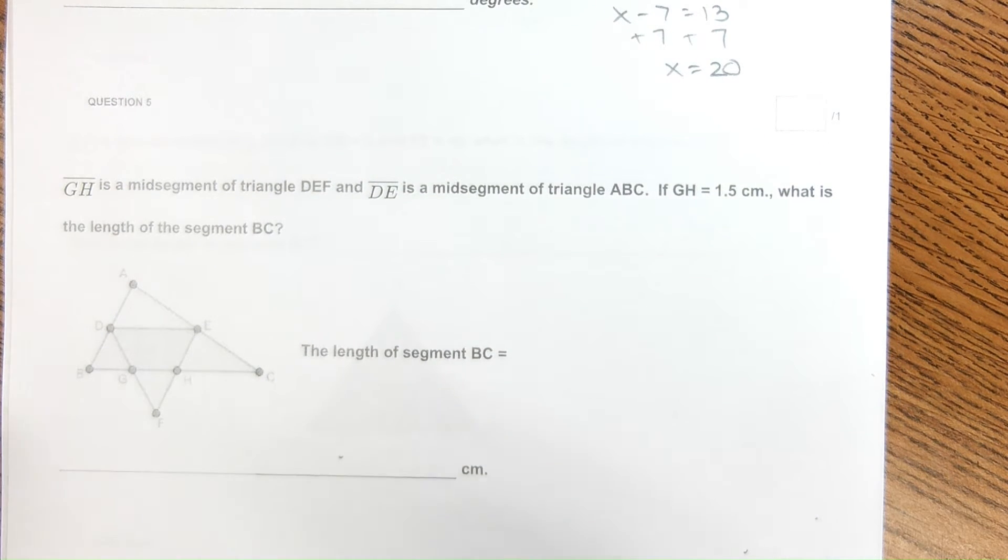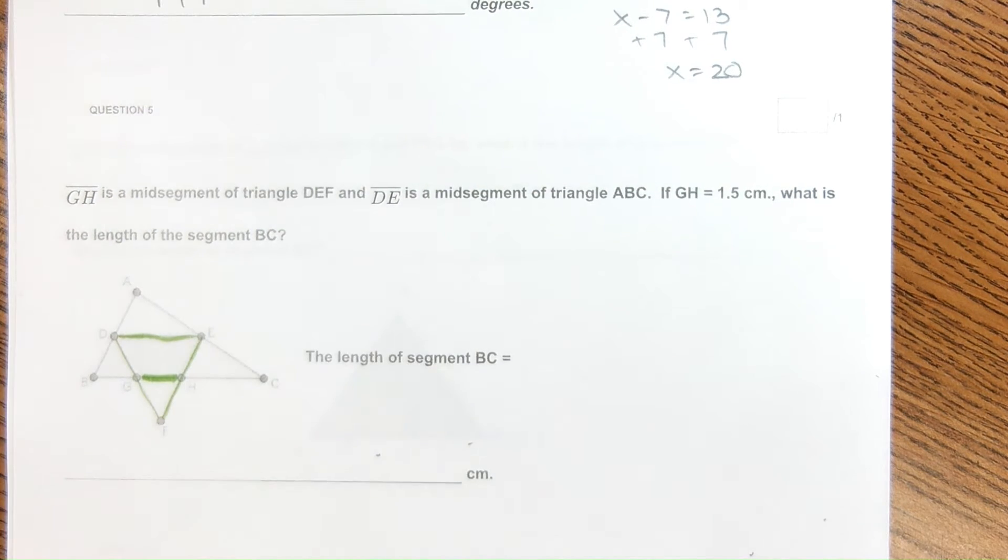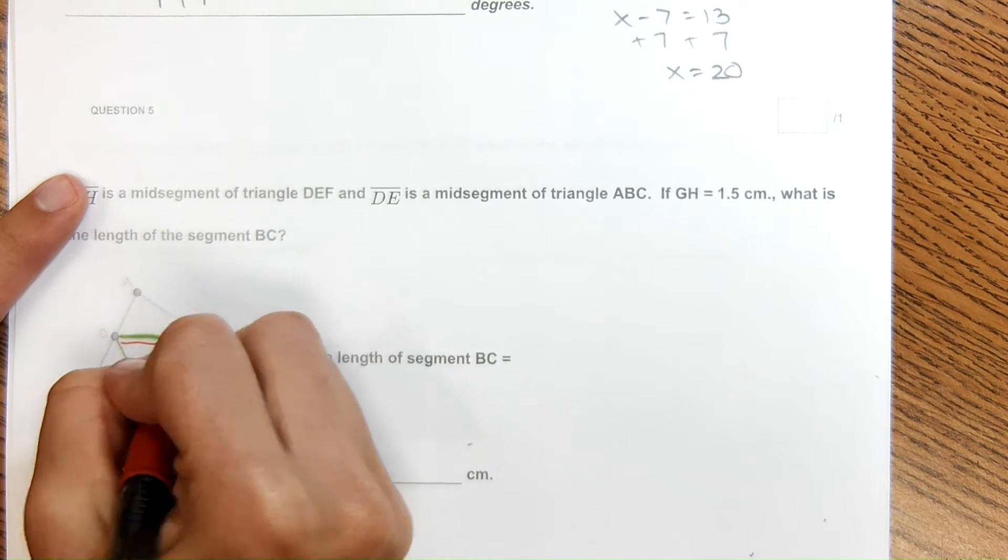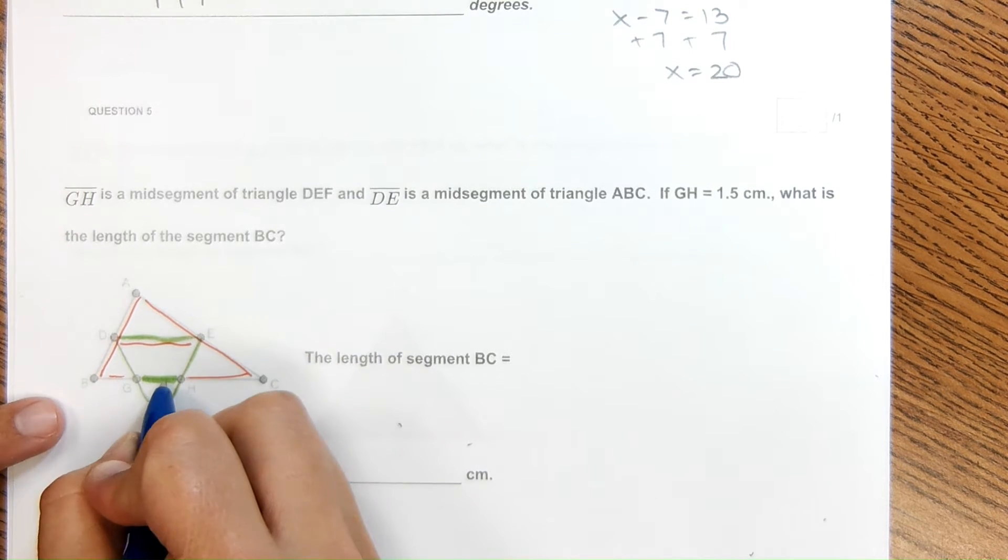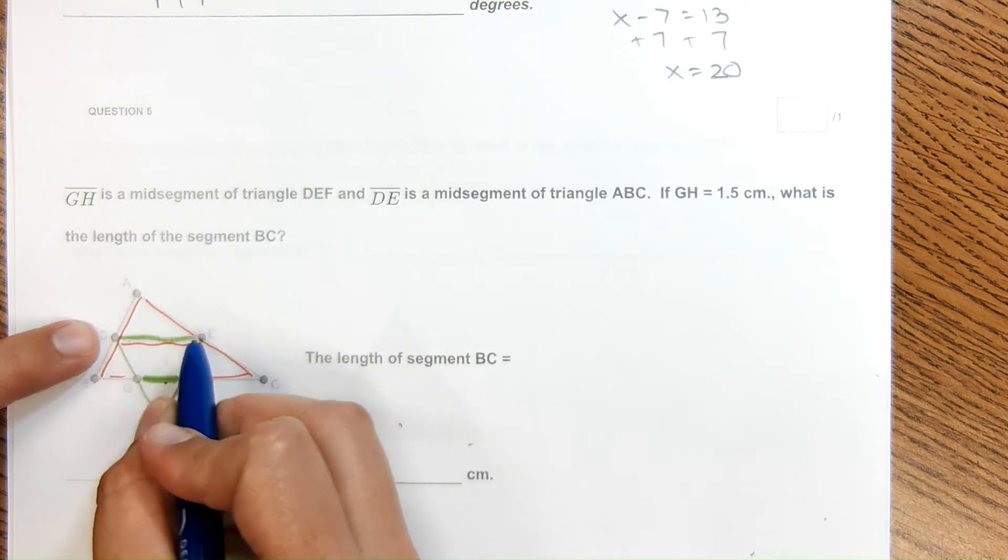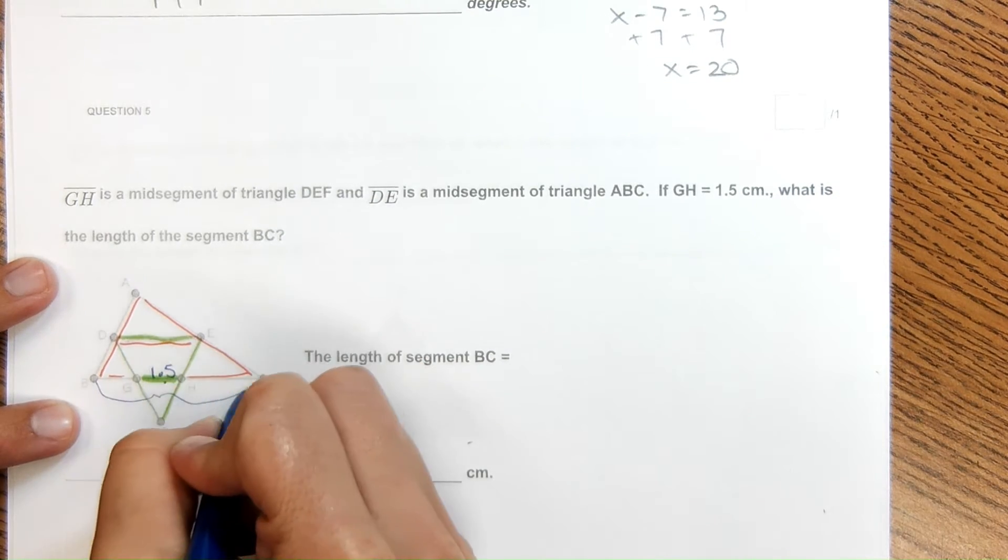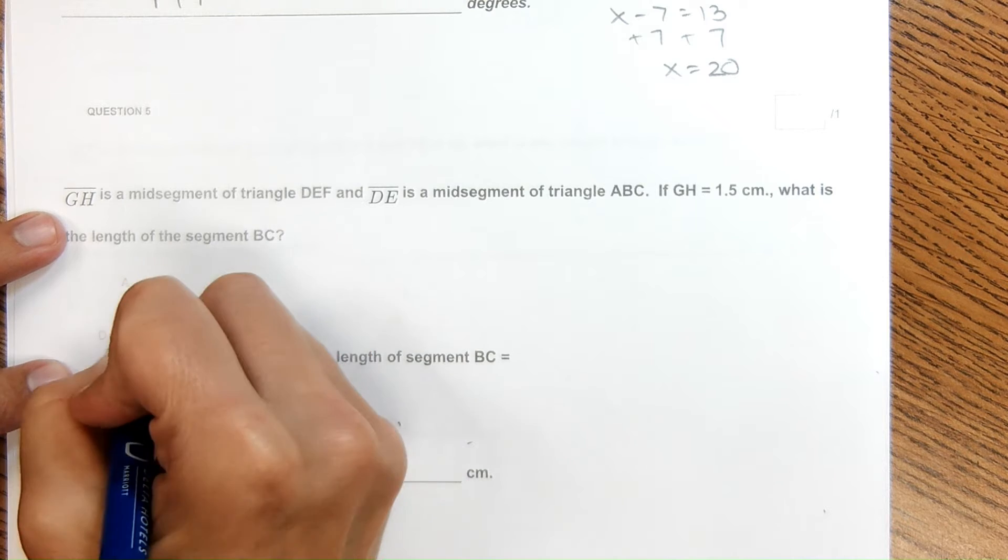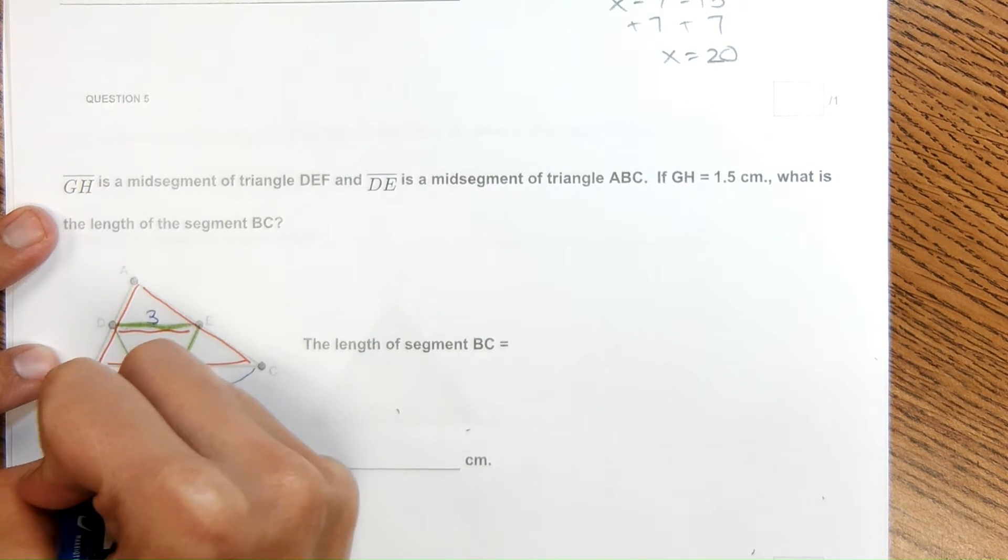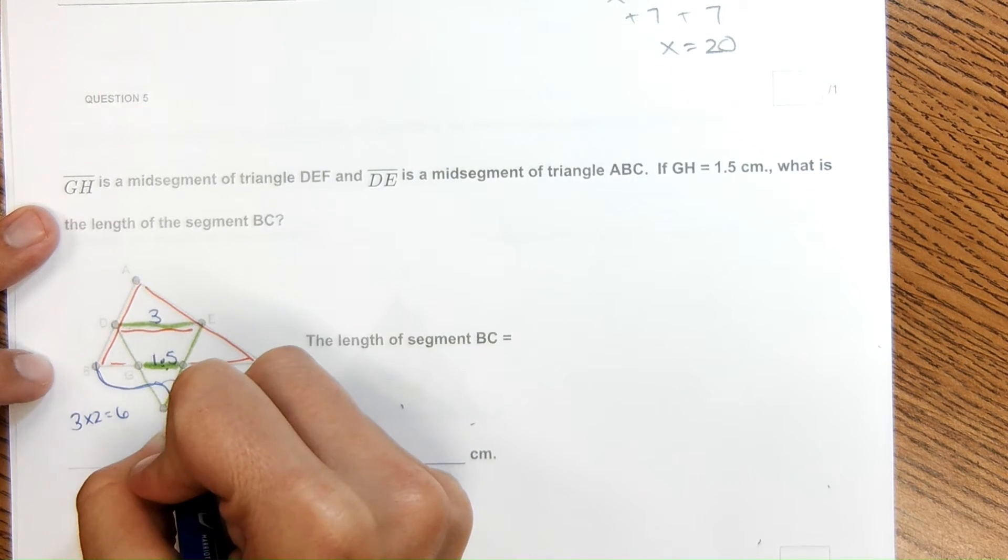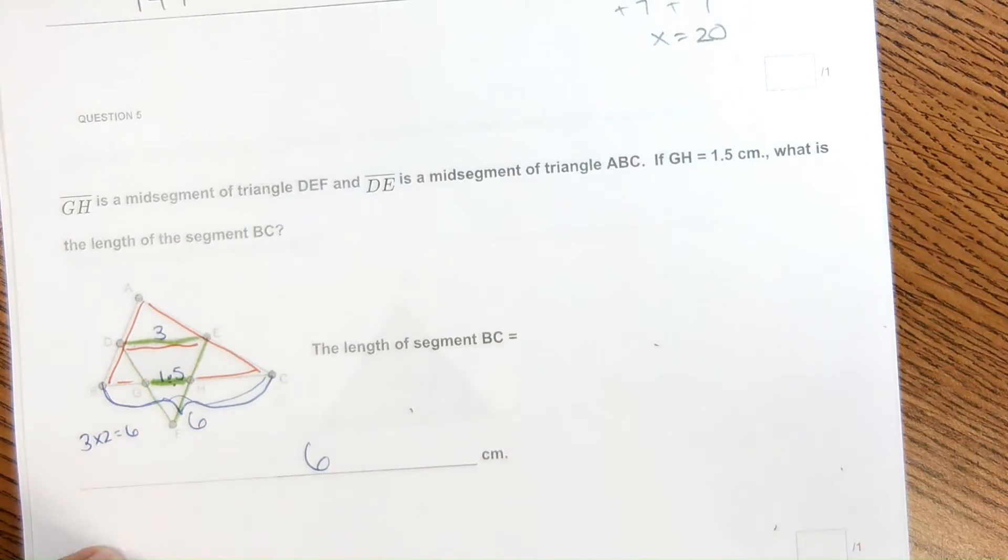Now the next one, this diagram here, it says that GH is the mid segment of this triangle here. And it also says that DE is the mid segment of this triangle. Two different things going on here. The mid segment should be half of the length of the base of that triangle. So it says that GH is 1.5. What is the length of BC? So if this is 1.5, I can double that to get the length of this. And then this is the mid segment of this triangle. So I can double 3, 3 times 2 to get 6. So this length of BC is actually 6.